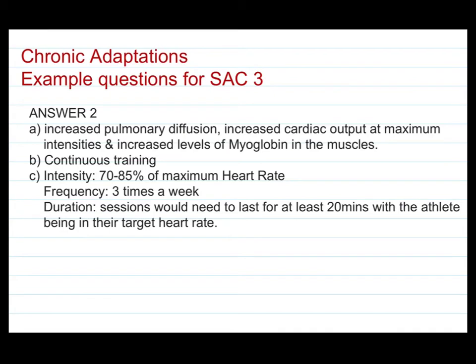To answer part A, it says 'list' so you only have to list them, you don't have to explain anything further. I've chosen to go with increased pulmonary diffusion, increased cardiac output at maximum intensities, and an increased level of myoglobin in the muscles. But there really are a huge number of things you could point out there if you wanted to.